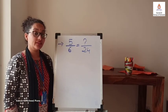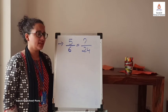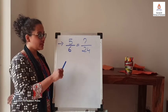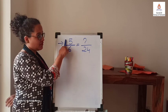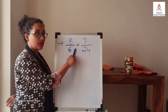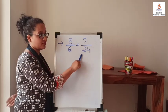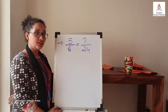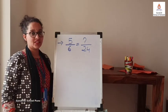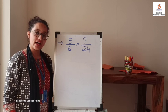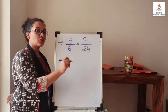Let us look at the next example, which is little different. Look at this question. 5 upon 6 is equal to this fraction. But here, numerator is missing. We need to find out what is the numerator of this fraction.